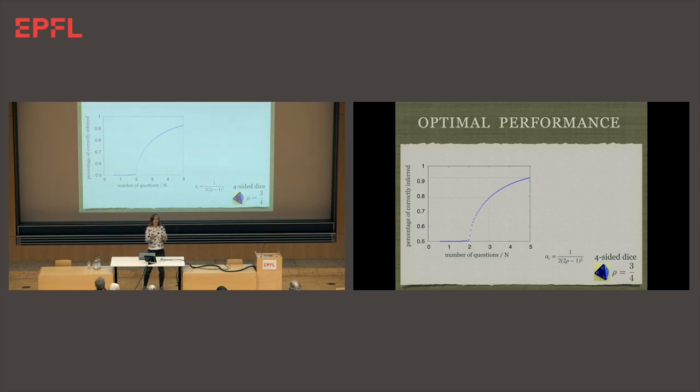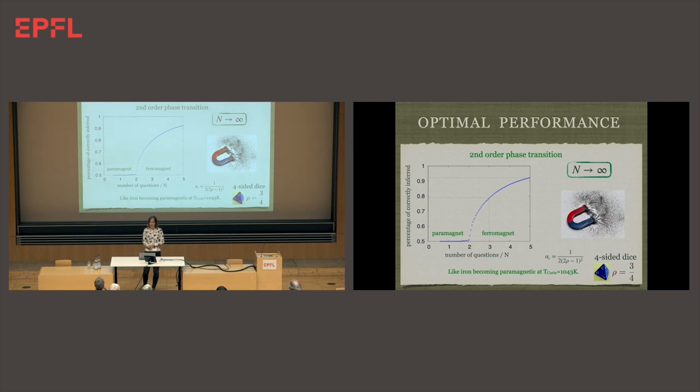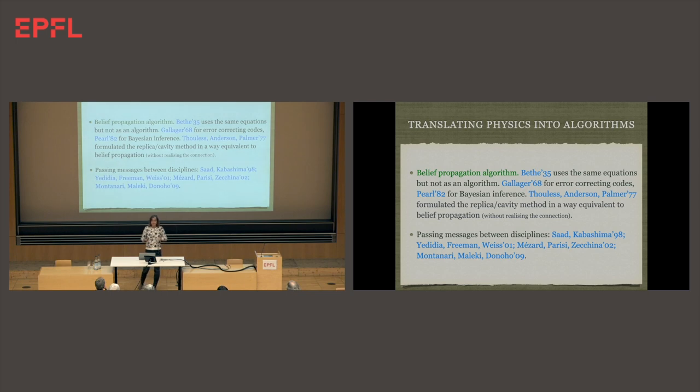What is plotted here is the percentage of correctly inferred cards, how many people I get right, as a function of the number of questions I asked per person. You see that it has this shape. If I ask less than two questions per person, I can say nothing. I have no information whatsoever left in these answers about who had which card. When the number of questions is slightly bigger than that, I start to be able to get something. The fact that this curve is strictly zero and then suddenly starts to get positive, that's a phase transition. That's the manifestation of more is different. If it was not large, this would be a smooth curve going from zero to one. But the naive expectation is wrong.